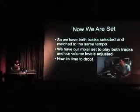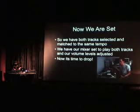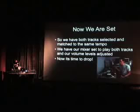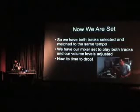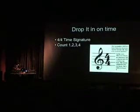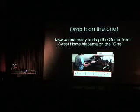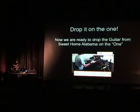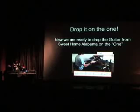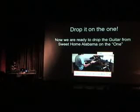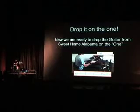Now we're set to get into it. We have our tracks selected, we're getting them matched to the same tempo, and the next thing we need to do is learn how to drop them on time. Dropping on time is pretty much as simple as counting — all you have to do is count one, two, three, four. We're dealing with beats in a four-four time signature. He's got the guitar dropped in and he's just keeping the time, like any guitar would keep time with the drum. One, two, three, four — and now we're ready to rock the party.